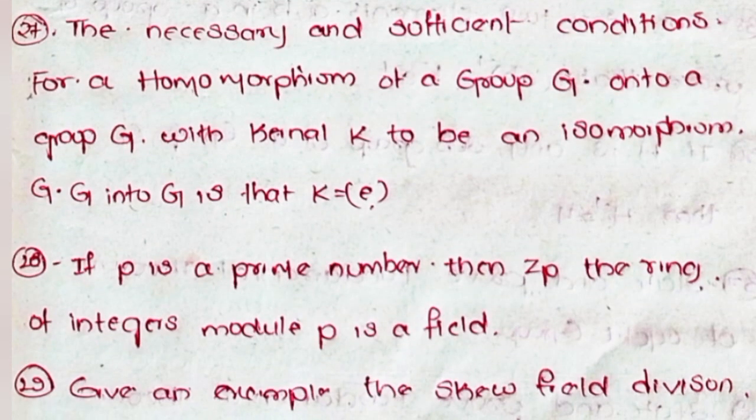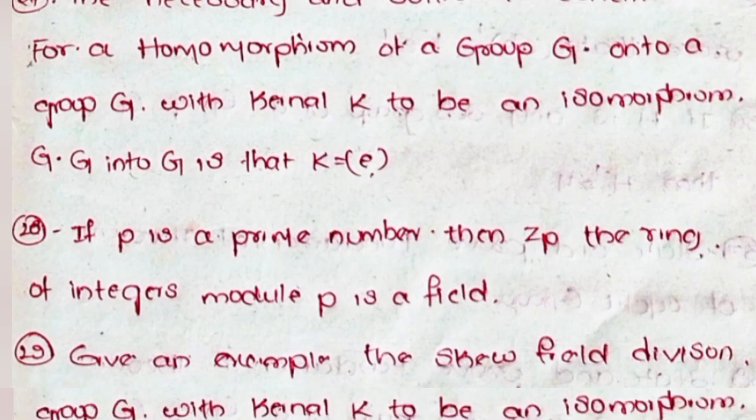Twenty-seven, the necessary and sufficient condition for a homomorphism of a group G onto a group G', with kernel K, to be an isomorphism from G to G' is that K = {e}. Twenty-eight, if P is a prime number, then Z_P, the ring of integers modulo P, is a field.